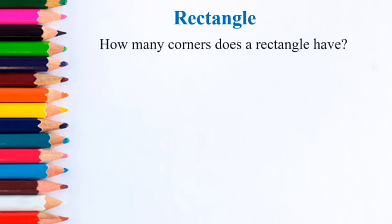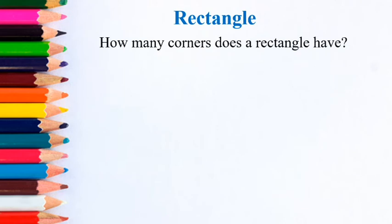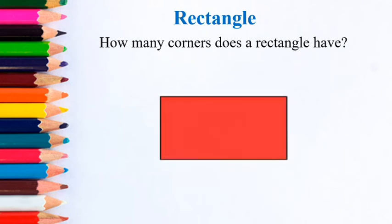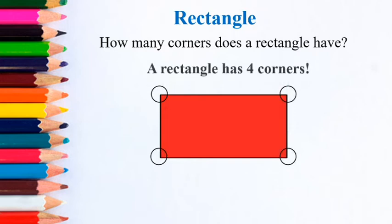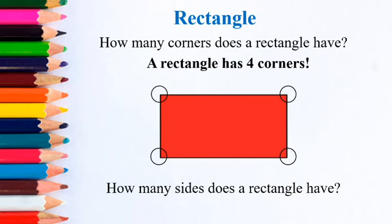This is the next shape you are going to look at — it's called a rectangle. How many corners does a rectangle have? Let's count — one, two, three, four. So a rectangle has four corners. How many sides does a rectangle have?